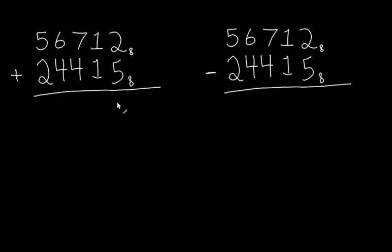Well, 2 plus 5 is 7. It's pretty easy so far. 1 plus 1 is 2. Smooth sailing. 7 plus 4. Uh-oh. Well, what do we get when we get 7 plus 4? Well, 7 plus 4 gives us 11.